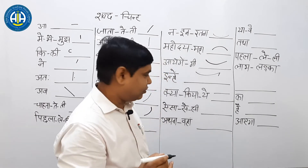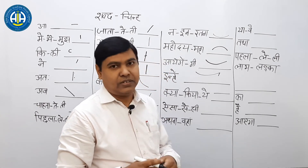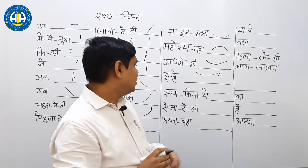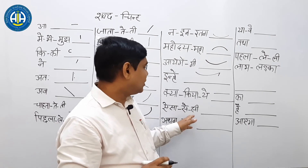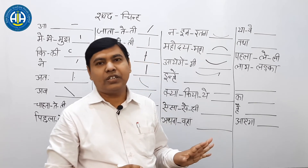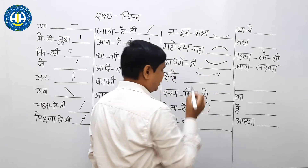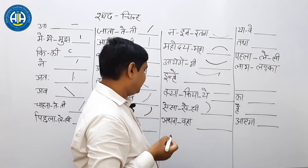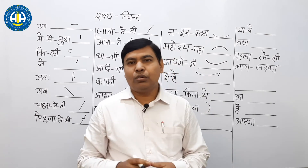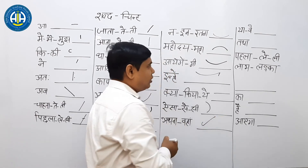आप देख सकते हैं: ऐसा, ऐसी — इस तरह के जो भी word हों, किसी भी word में 'sir' आएगा तो बस sound के according आपने sir बनाया है, वो बना देगा। अथवाँ और वहाँ — दोनों की sound के लिए 'वह' का बनाना है, बस simple।